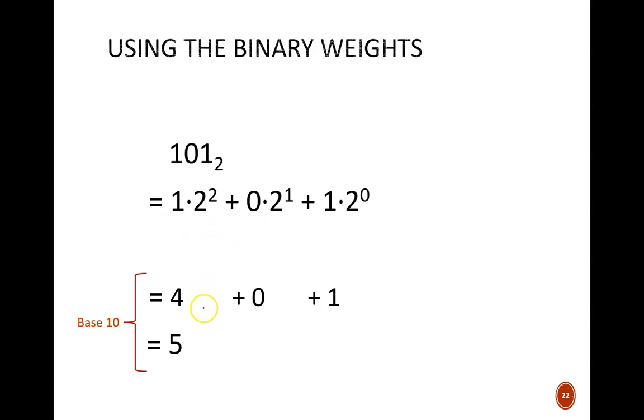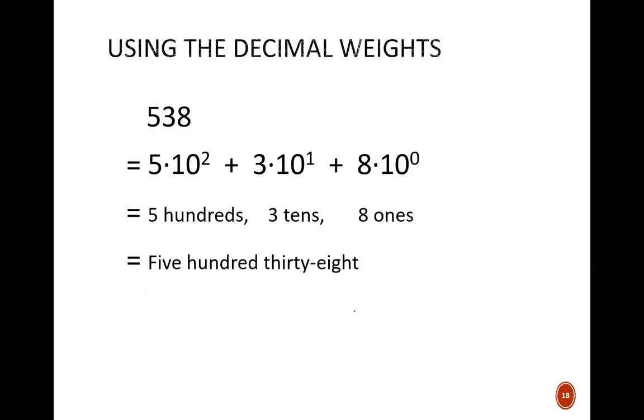Interpreting this in decimal, the products become 4, 0, and 1. And all of those are added together, which yields a final value of 5. Notice how this pattern here is identical to what we saw a few slides prior for decimal weights. It just feels strange to most people when they are not viewing the world through their decimal lenses.